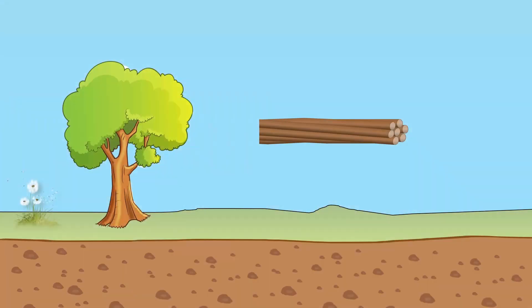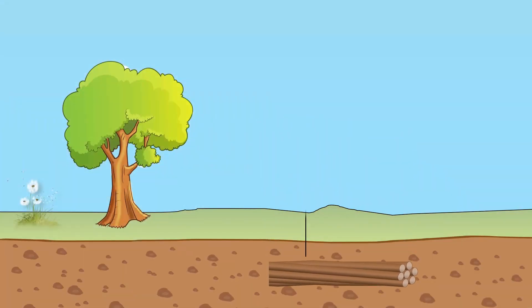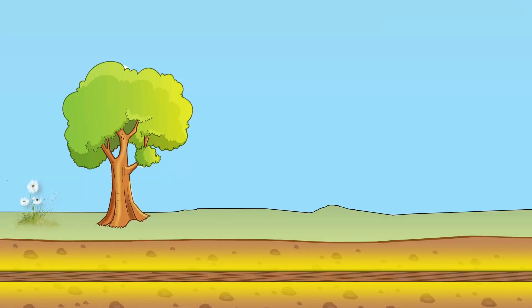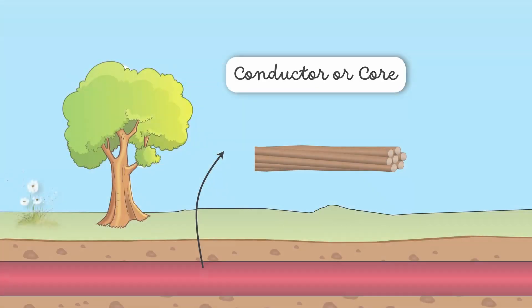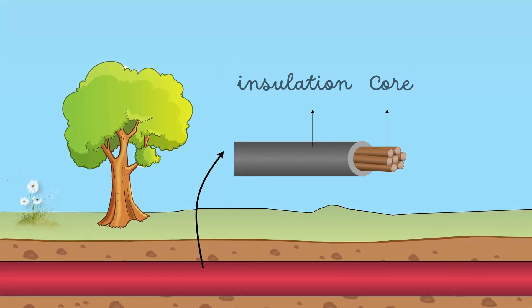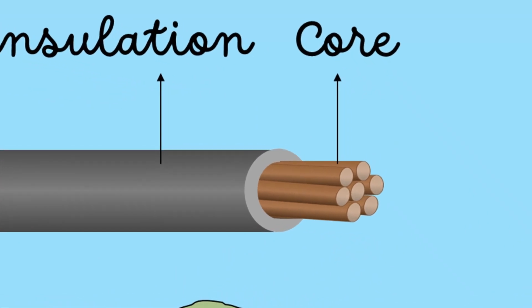If we bury this bare conductor, it will be surrounded by soil. Soil conducts electricity, so the transmitted electricity will be discharged into the ground. To avoid this, every conductor or core is wrapped with insulation material. The thickness of the insulation depends on the voltage to be withstood by the cable.